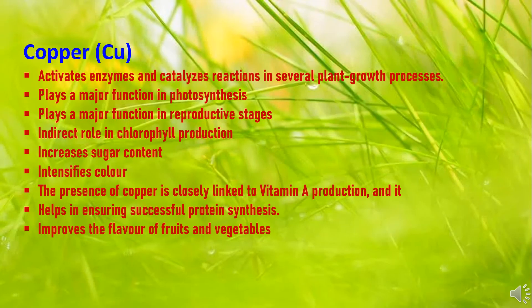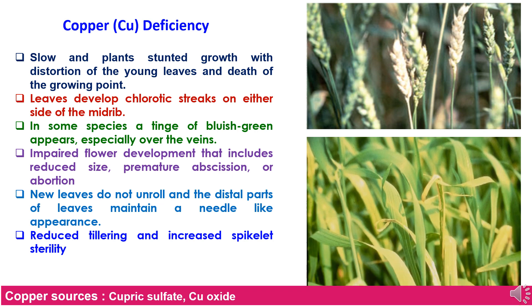Copper plays a role in catalyzing several plant processes. It activates enzymes and catalyzes reactions in several plant growth processes, and plays a major function in photosynthesis with an indirect role in chlorophyll production. Copper has a major functional role during the reproductive stage — it increases sugar content, intensifies color of the plant and produce, and its presence is closely linked to vitamin A production and helps ensure successful protein synthesis. It also improves the flavor of fruits and vegetables. In deficiency, plant growth is slow and plants remain stunted with distortion of young leaves and death of the growing point.